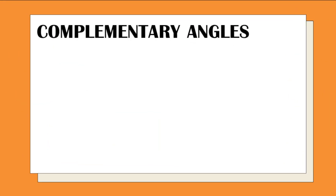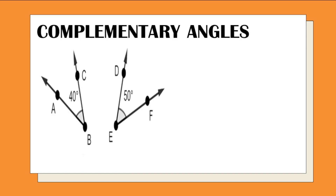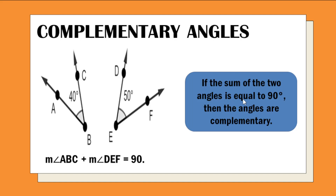Next, a pair of angles is complementary angles. Measure of angle ABC plus measure of angle DEF is equal to 90. So, when we have a small 'm', the answer has no degree sign; but without the 'm', we use the degree symbol. Complementary angles — when you add the two angles, the answer is 90 degrees. If the sum of the two angles is equal to 90 degrees, then the angles are complementary. Just like in our example: angle ABC is 40 degrees plus angle DEF is 50 degrees.